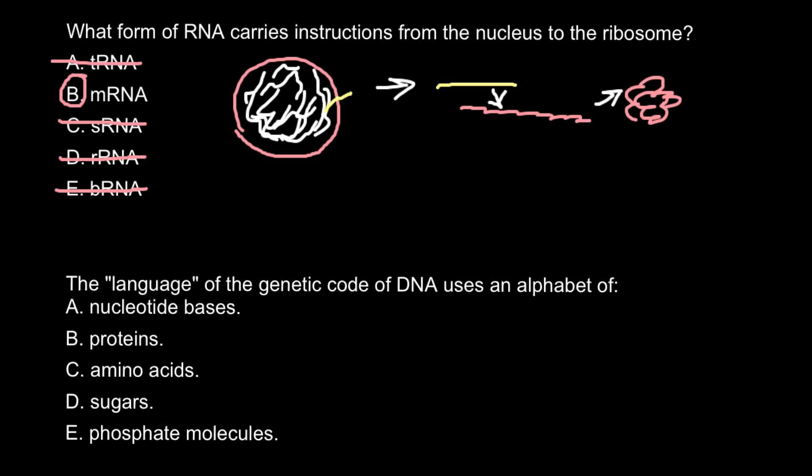Next question: the language of the genetic code of DNA uses an alphabet of... and here are five answers to choose from. Answer E, phosphate molecules, is incorrect. Phosphate is present in DNA, but we cannot use this as an answer.